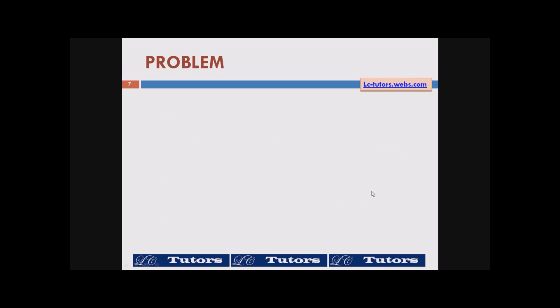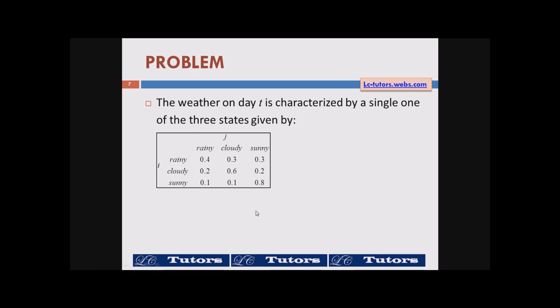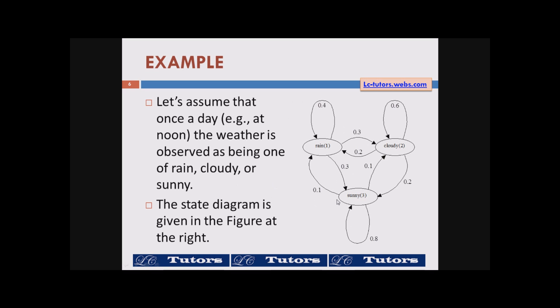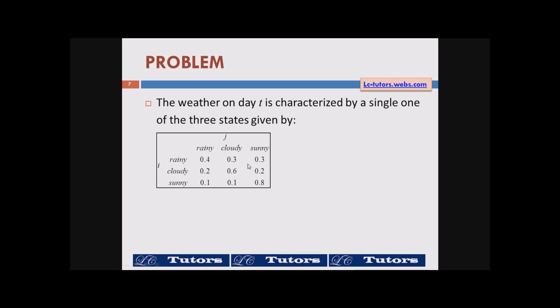And then we can also characterize the weather on day t is classed by a single one of the three states given by this matrix. So we have this figure here or we can have it in a matrix form. i current state j is the next day. If it was a rainy day next day is a rainy day is 0.4. Rainy to cloudy 0.3. Rainy to sunny 0.3. So on and so forth. Also we can write it in matrix form Aij is equal to the matrix equal to Aij transition probabilities.